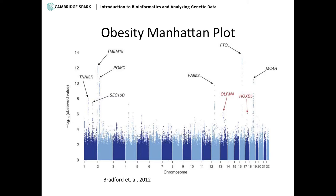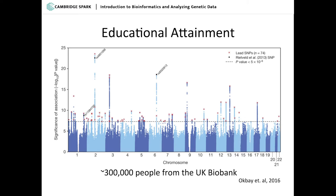They found eight or nine different locations that all show a really strong association with presence or absence of obesity. To get something this strong, you have to gather quite a few people — this study probably had 20,000 or 30,000 people. A more recent one, just published, used 300,000 people from the UK Biobank. The UK Biobank has about half a million people who've all been genotyped, and they have information on height, weight, and information about their parents.